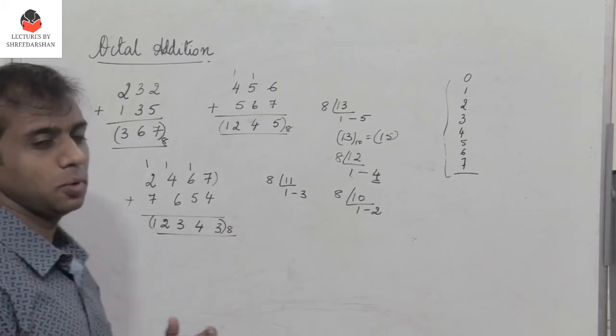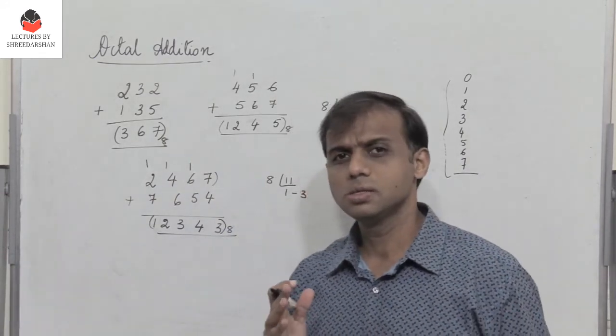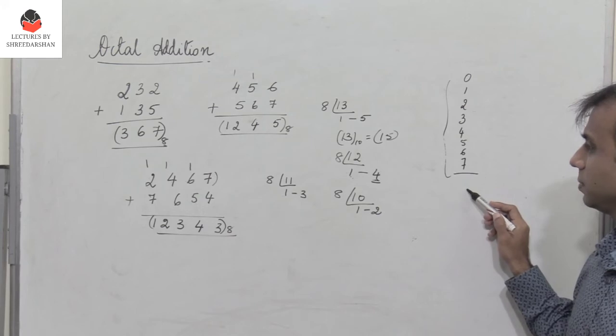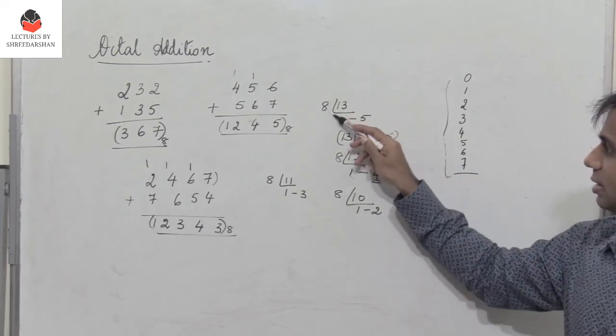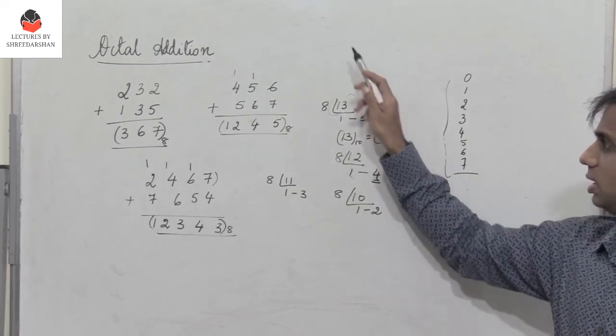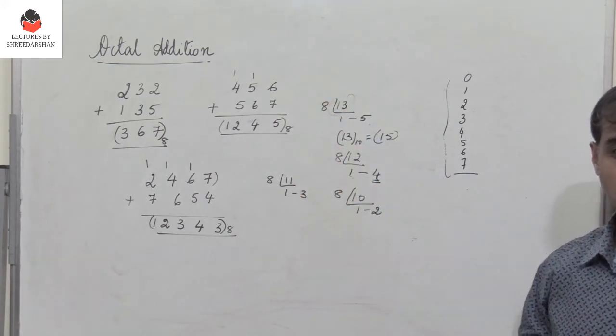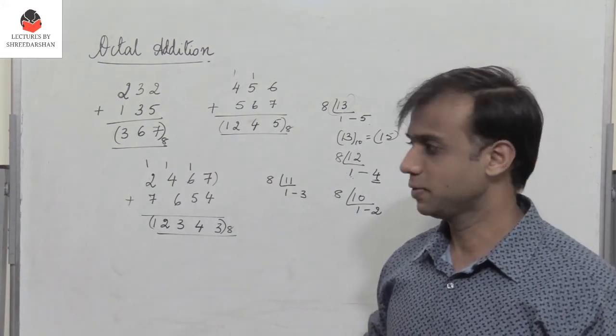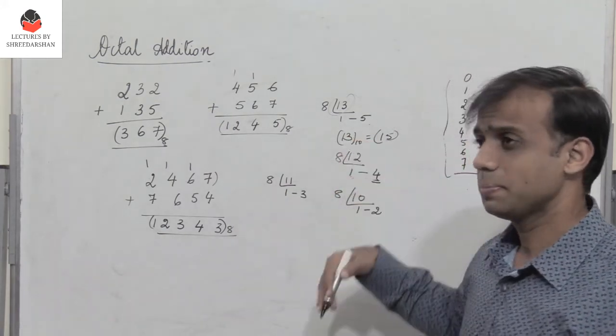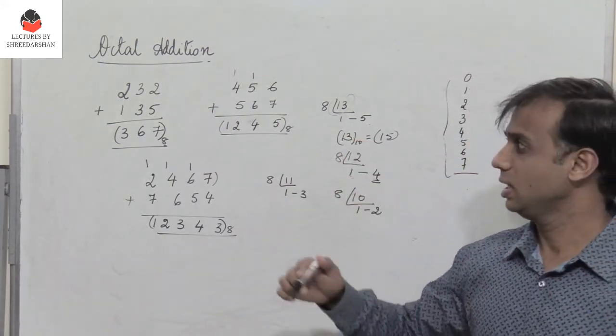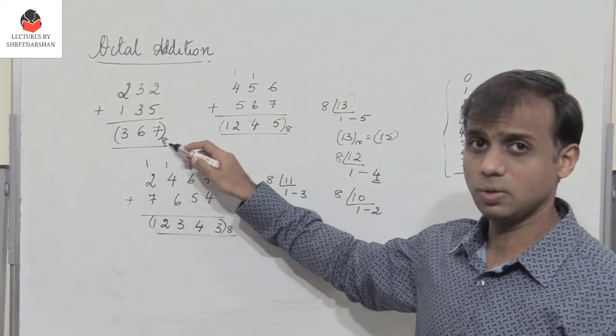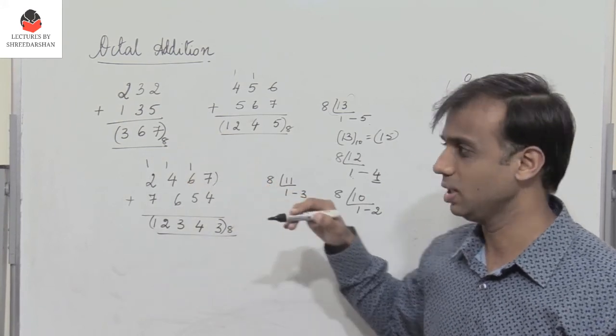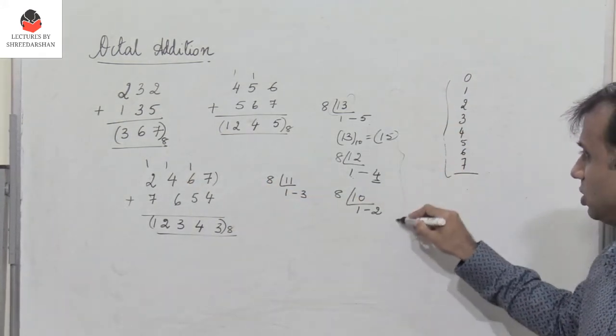This is how we perform octal addition, which is very simple. You just have to remember that if the added result is greater than 7, you convert the digit to octal format and take the carry and perform addition as usual. We've covered what happens when the result is less than or equal to 7, and when it's greater than 7.